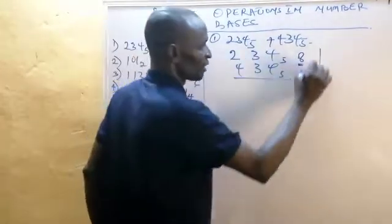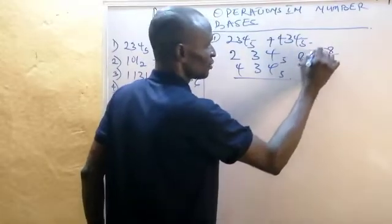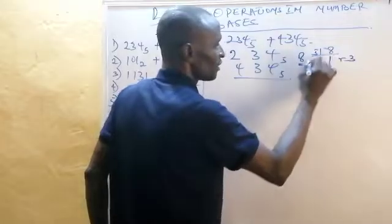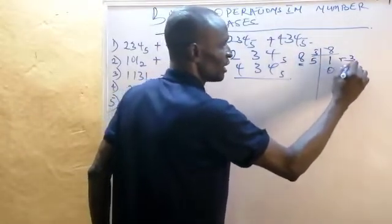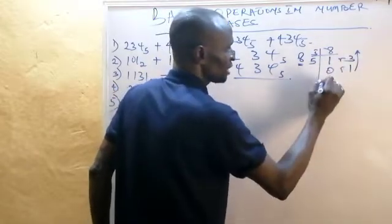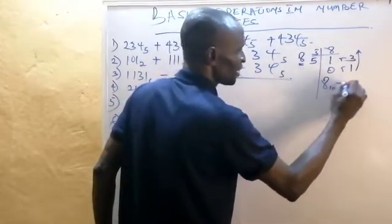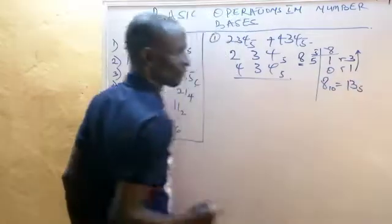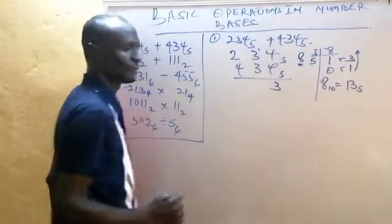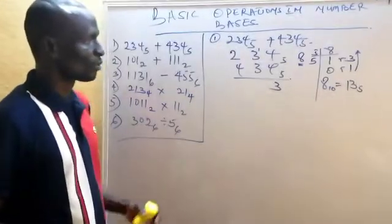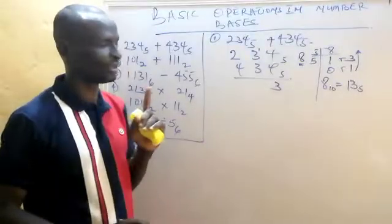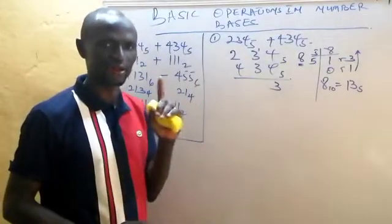Let's convert eight to base five. Eight divided by five gives one remainder three. So eight in base 10 is the same as 13 in base five. I'll write down three here and carry one. The same way we carry one for every ten in base 10, for every five in base five, I carry one.